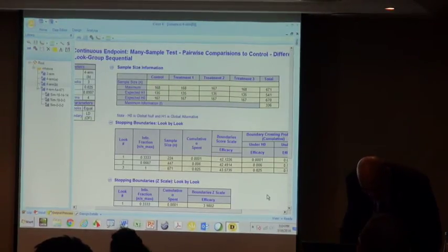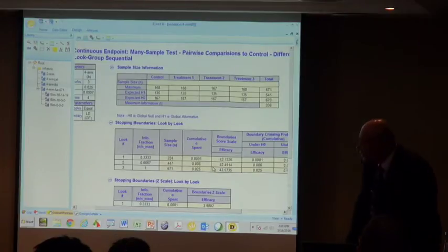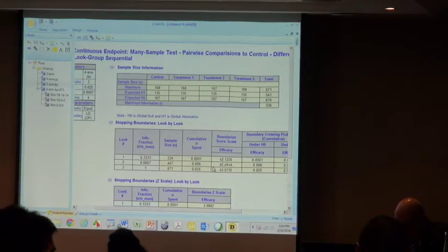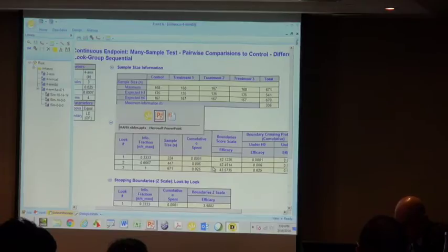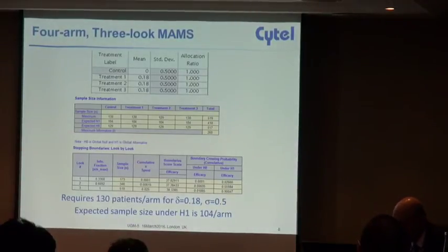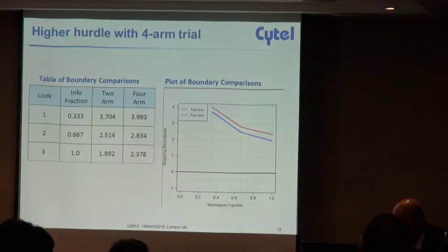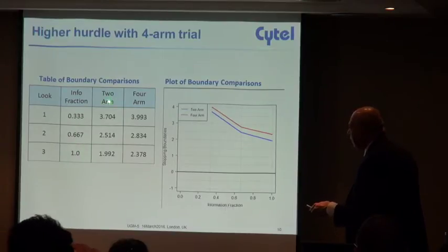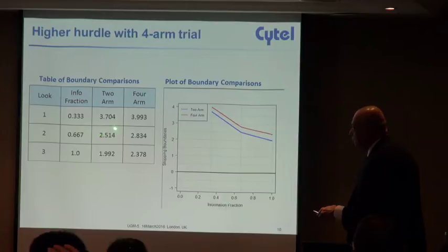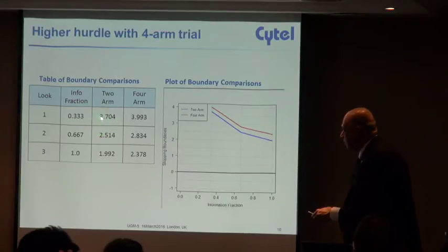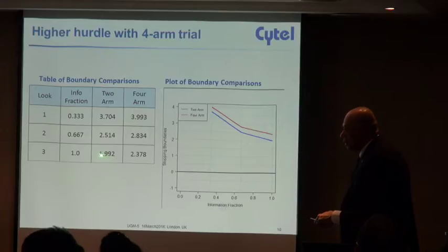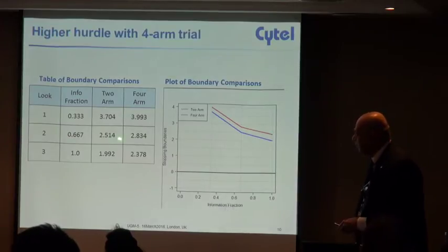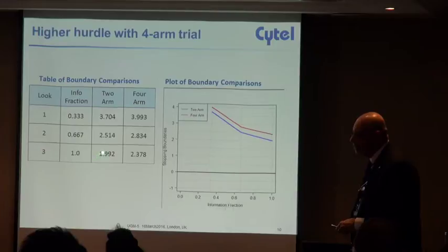The next thing to do is ask yourself: let's look at the boundaries. What do the boundaries look like for these two different designs, one which is a two arm design and one which is a four arm design? Here you can see three equally spaced looks. This is a classic O'Brien-Fleming boundary for three equally spaced looks with a z-statistic of 3.7, 2.5, and one point close to 1.96. The O'Brien-Fleming boundary is pretty conservative at the last look.